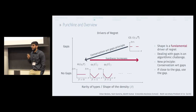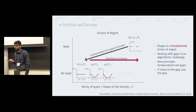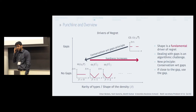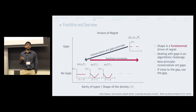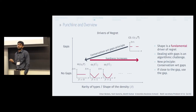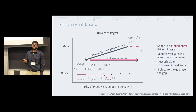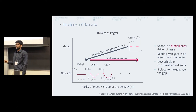The rest of the talk is divided into three parts. We'll first describe the shape as a fundamental driver of regret, then address the algorithmic challenge of dealing with gaps, leading to our innovation of conservatism with respect to gaps. The maxim is simple: if you're close to a gap, you use the gap as the threshold.